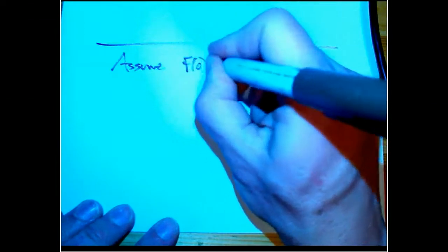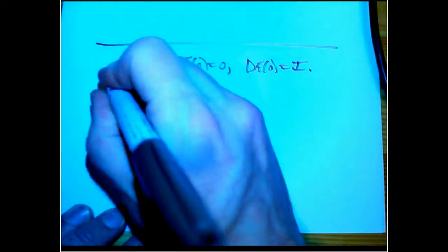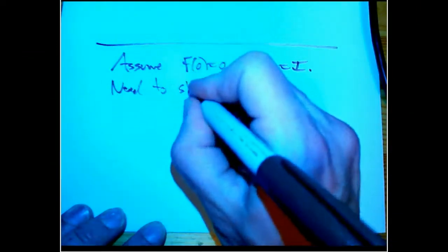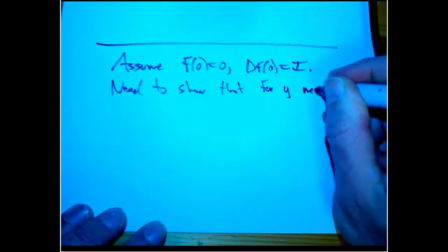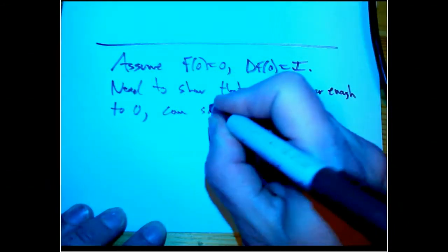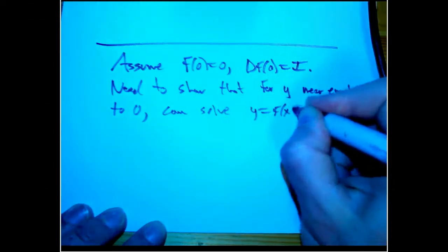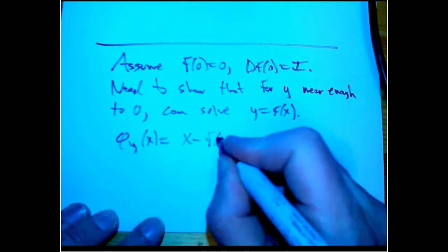So from now on we're going to assume that f of zero equals zero, that df at zero is the identity, and that we just need to show that for y near enough to zero we can solve y equals f of x. Now we create φ_y(x) is x minus f of x plus y.